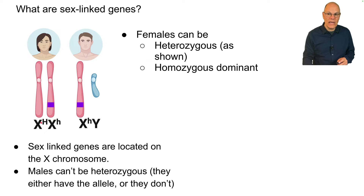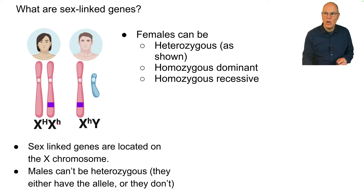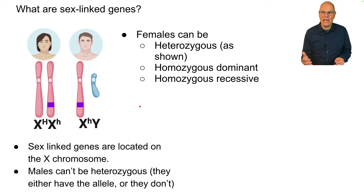Females could also be homozygous dominant — that would be X big H, X big H — or they could be homozygous recessive: X little h, X little h.